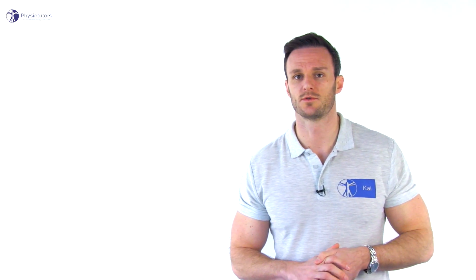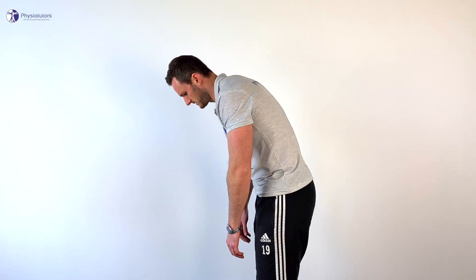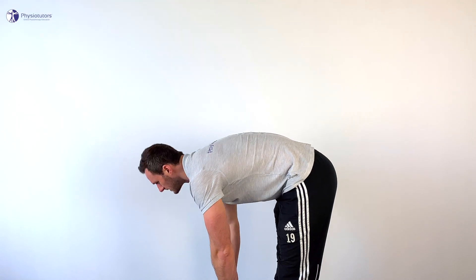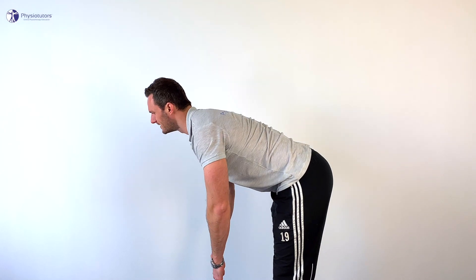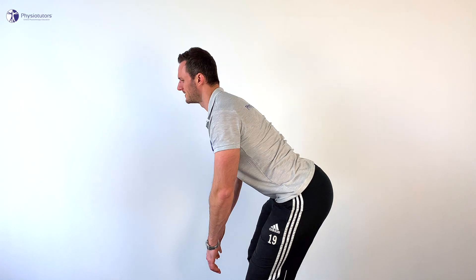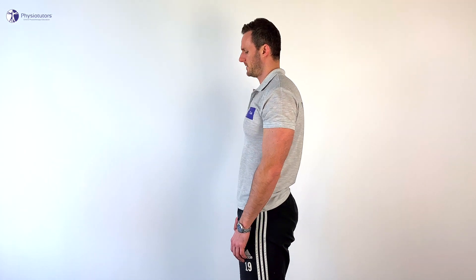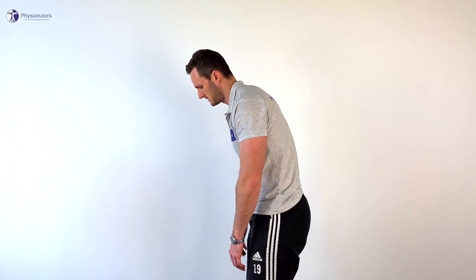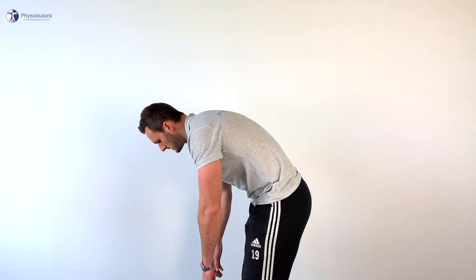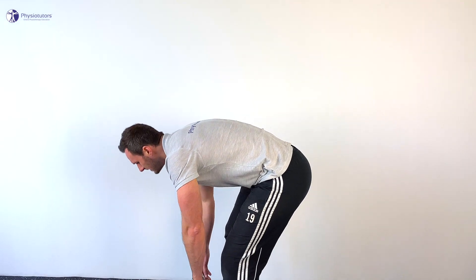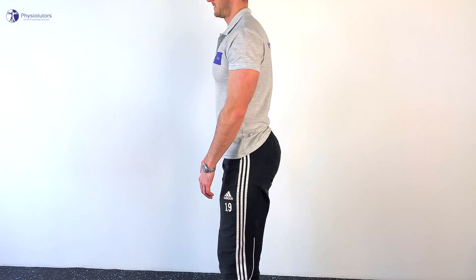The loose control group could also display a reversed lumbopelvic rhythm. So instead of extending their spine one vertebra after another upon deflection, they are bending their knees and extending their lumbar spine en bloc to come up again.